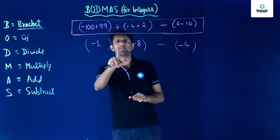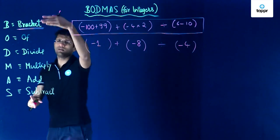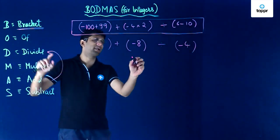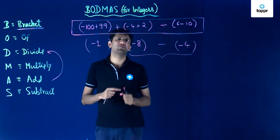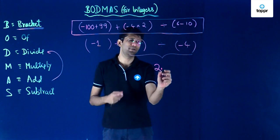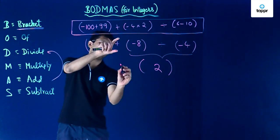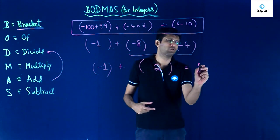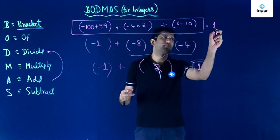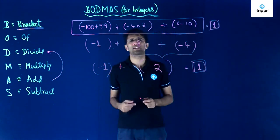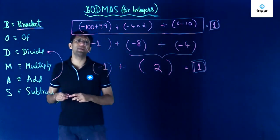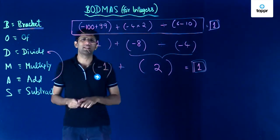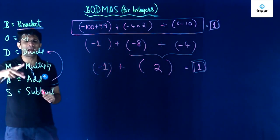In this step we have two operators — plus and divide. Looking at the BODMAS order, divide comes before addition, so we first divide minus 8 by minus 4, which gives plus 2. Then we add the minus 1 we originally obtained: minus 1 plus 2 equals plus 1. So the value of this entire expression is 1. Whenever we have an expression with too many operators and need to know which to perform first, we use the BODMAS method, which stands for Bracket, Of, Divide, Multiply, Add and Subtract.